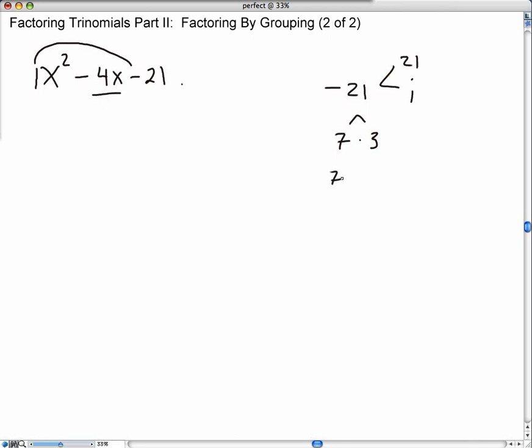You might say, well, 7 take away 3 gives you 4, but that's not the negative 4 that I want. How about, so that's wrong, how about 3 take away 7? Well, that gives me the negative 4 that I need.